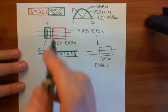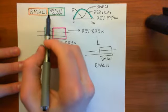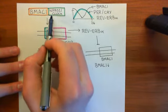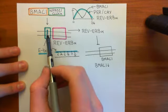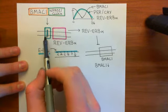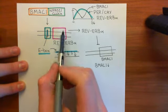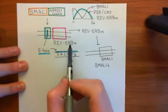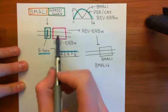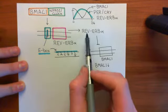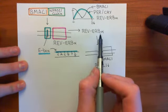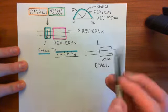We then discussed that there is an accessory cycle: BMAL1 dimerized with NPAS2 or CLOCK also binds to and acts on the promoter region of the Rev-ERB-alpha gene, and increases the production of this protein, Rev-ERB-alpha. Rev-ERB-alpha itself is a transcription factor.